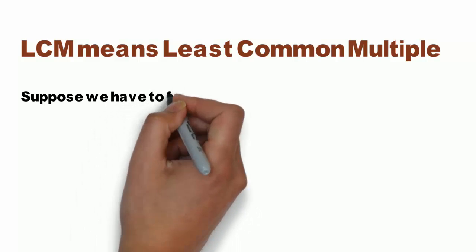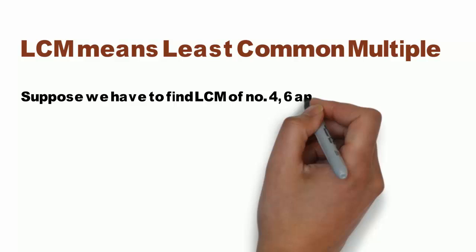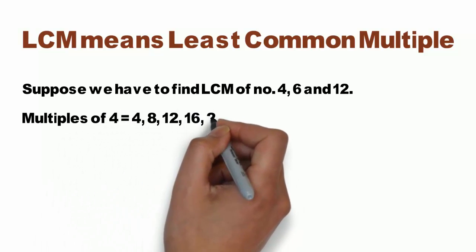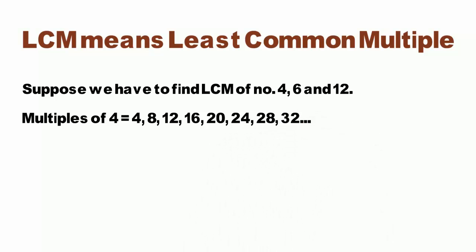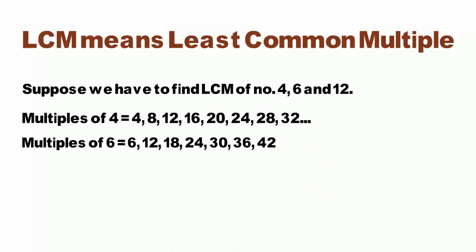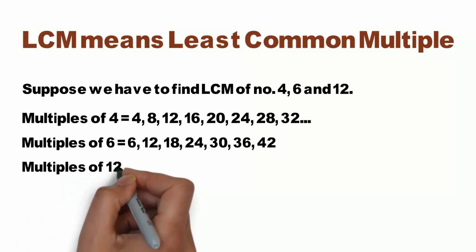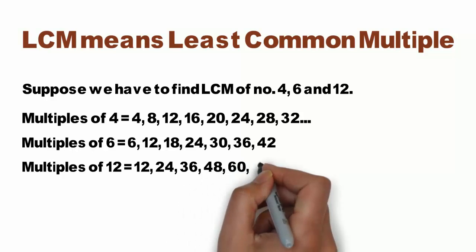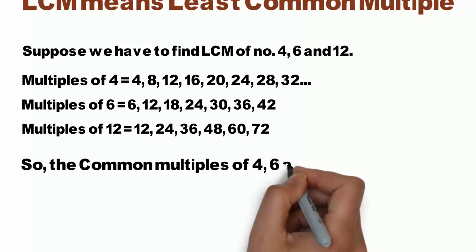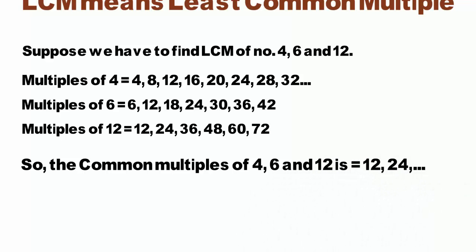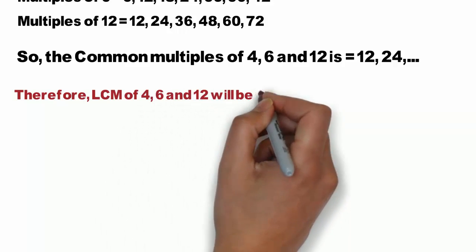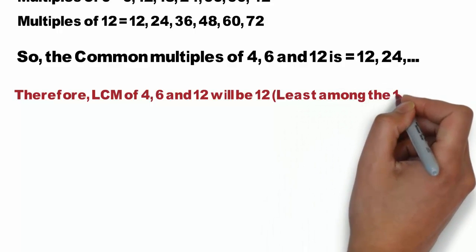Now we have to find the LCM of the numbers 4, 6, and 12. The multiples of 4 are 4, 8, 12, 16, 20, 24, 28, 32, and so on. The multiples of 6 are 6, 12, 18, 24, 30, 36, 42, and so on. The multiples of 12 are 12, 24, 36, 48, and so on. The common multiples are 12, 24, 36, and so on. So the Least Common Multiple is 12.